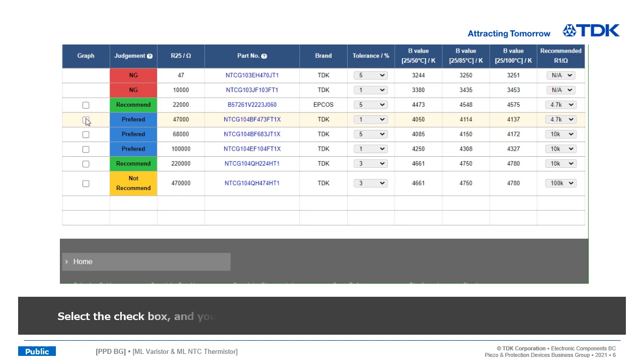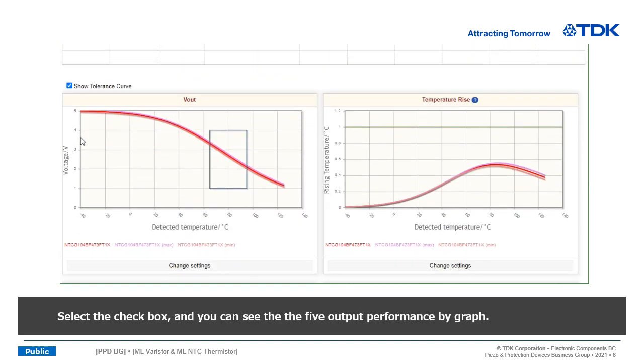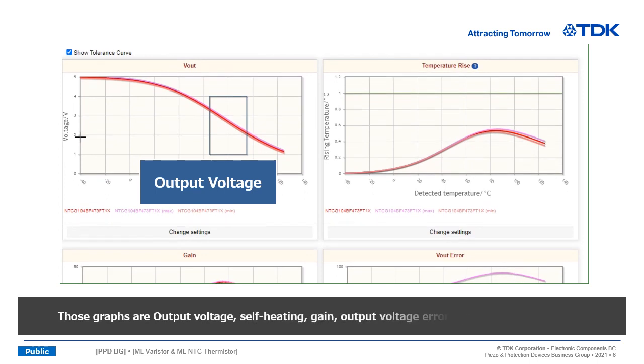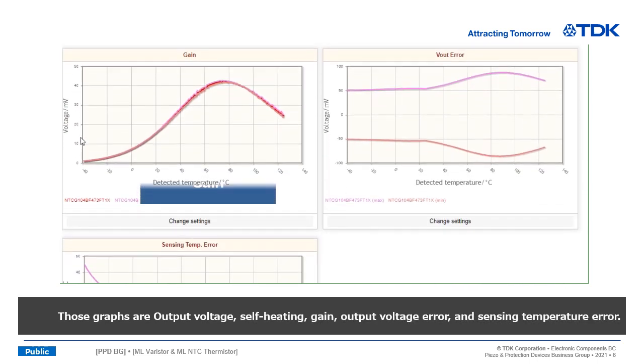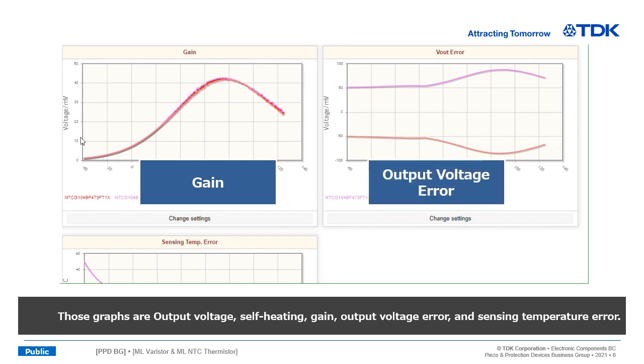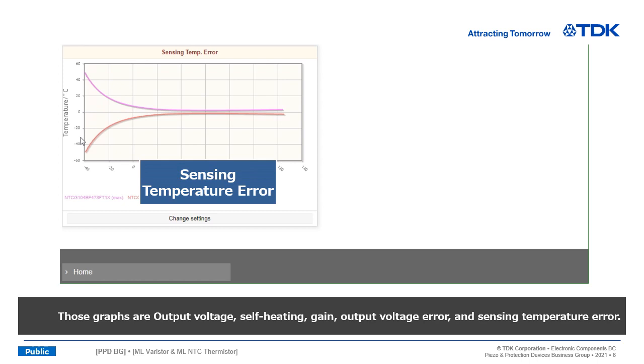Select the checkbox, and you can see the five output performance by graph. Those graphs are output voltage, self-heating, gain, output voltage error, and sensing temperature error.